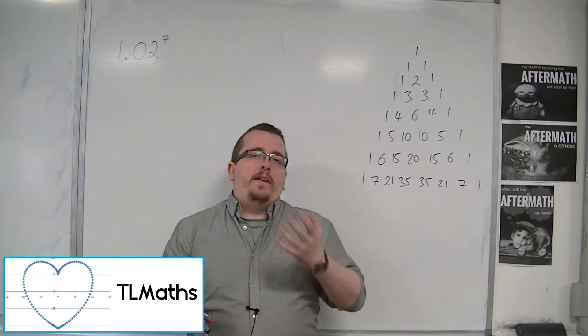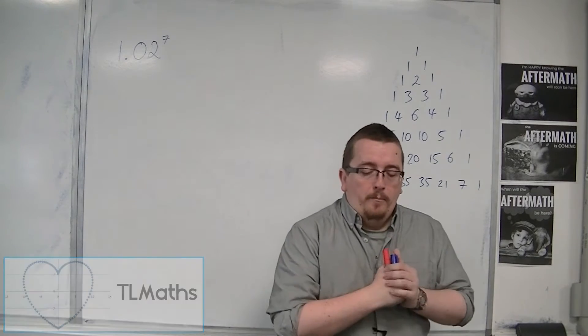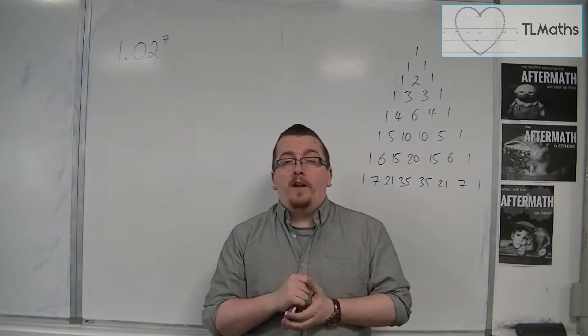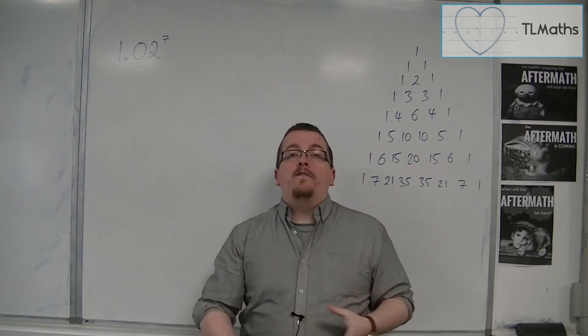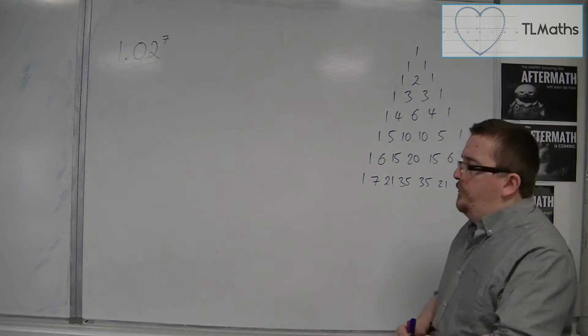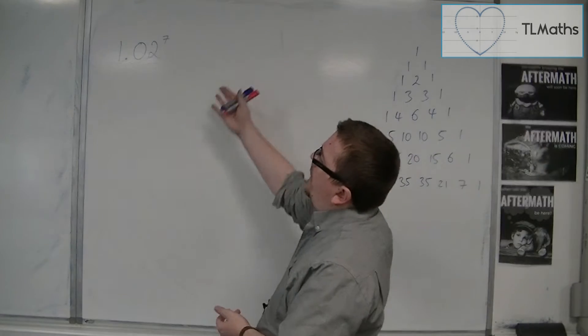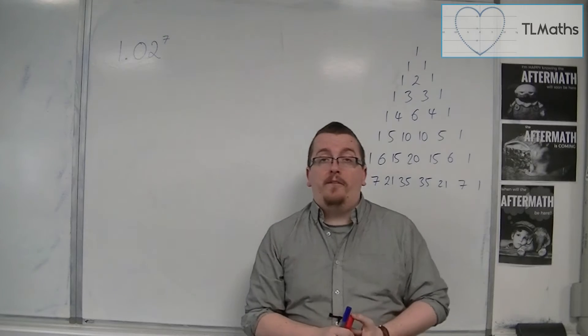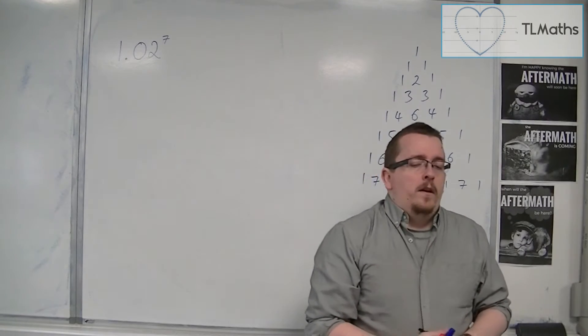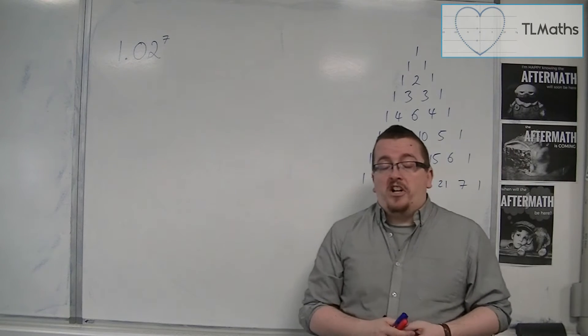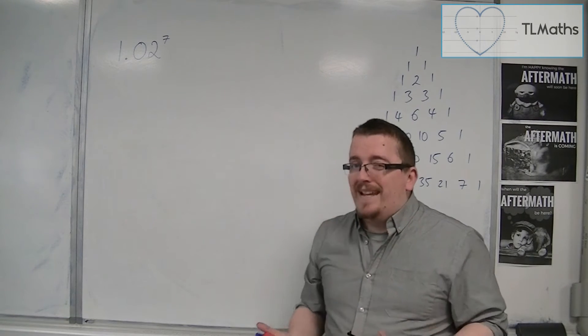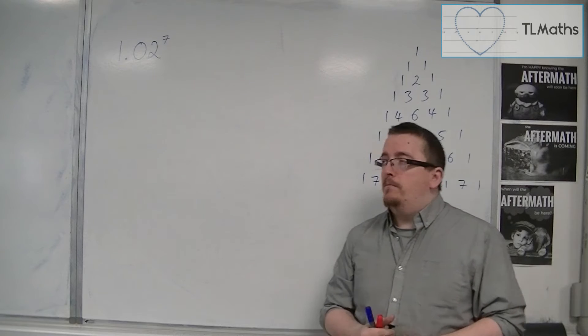One of the uses of binomial expansion is being able to multiply things out very quickly and easily to a reasonable degree of accuracy. Let's say I wanted to work out 1.02 to the power of 7 by hand. As you could expect, this could take quite a long time and it's quite liable to making a calculation error, a numerical error.